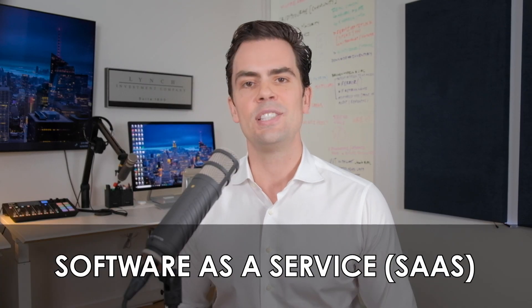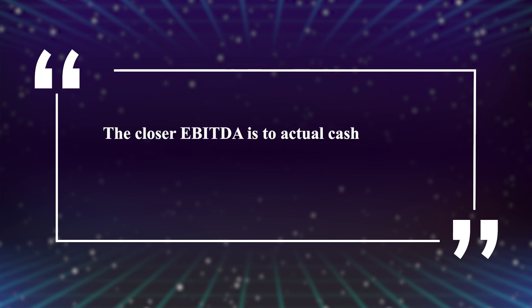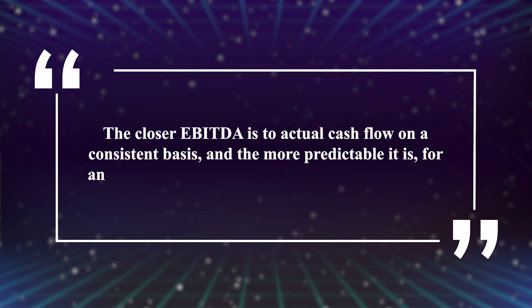By way of example, a SaaS-based business with a particularly sticky business model would command a higher EBITDA multiple on average than a business that has to purchase and replace expensive equipment frequently. The potential to scale and the difference in capital intensity between the two business models would largely contribute to that. As a quick way to think through this logic, the closer EBITDA is to actual cash flow on a consistent basis, and the more predictable it is for an industry or a company, the higher the multiple.